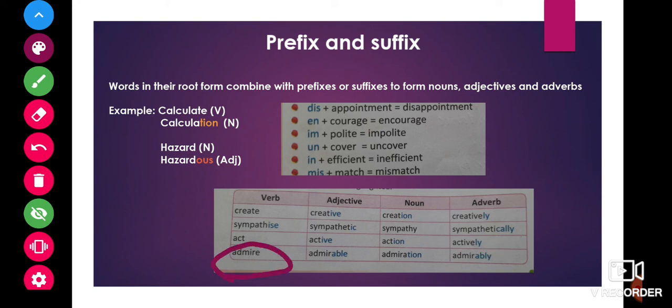In the same way, admire is the root form of the verb. When we add the suffix a-b-l-e, admirable becomes an adjective. When we add the suffix i-o-n, admiration becomes a noun.